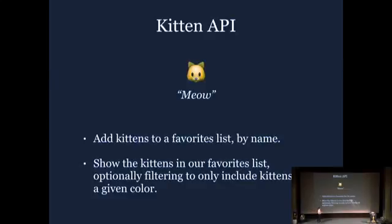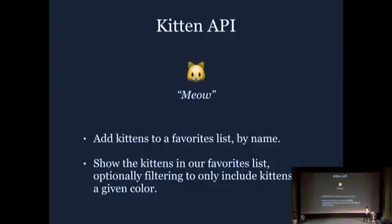To do this, I'm going to need the help of a little API that we're going to work through — our lovely Kitten API. It has two very simple functions. One is the ability to add a kitten to your favorites list: you give it a kitten name and it adds it to your saved list. The other is the ability to show the kittens in your favorites list, optionally filtering down to only kittens of a particular fur color.